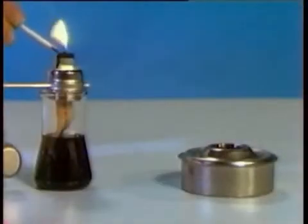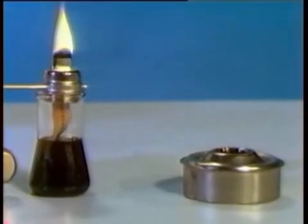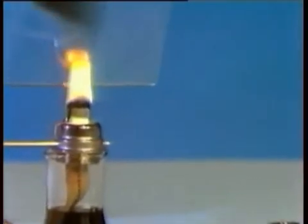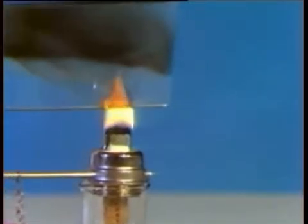Oil is made of carbon and hydrogen. The hydrogen burns first and the carbon next. If we cool the flame with this glass, the carbon doesn't become hot enough to ignite. It deposits as soot or carbon black.